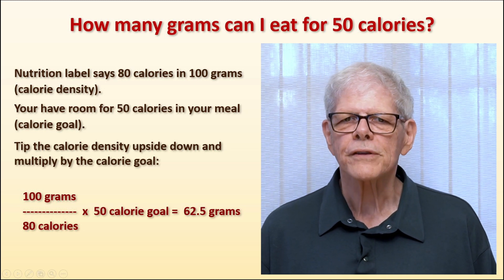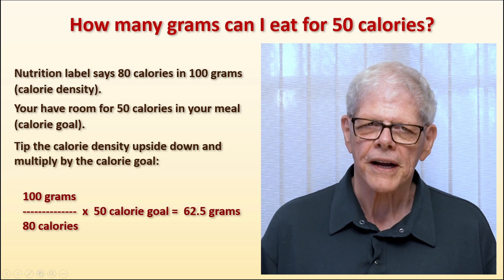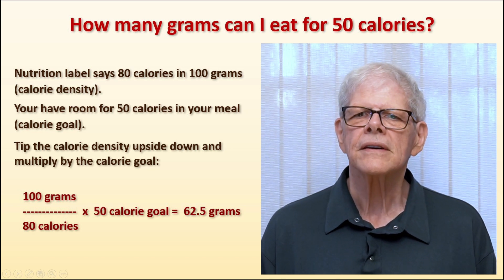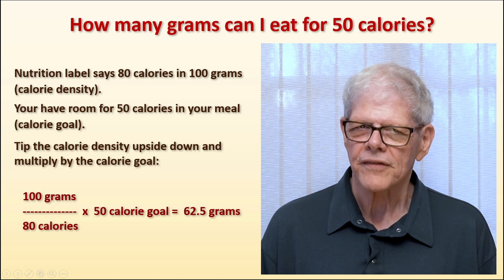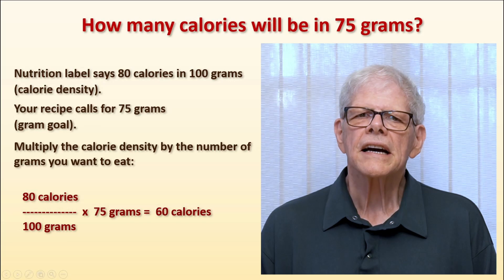The label says 80 calories per 100 grams. So just flip that over so that it says 100 grams divided by 80 calories and multiply by the number of calories you have available to get the number of grams you can eat.